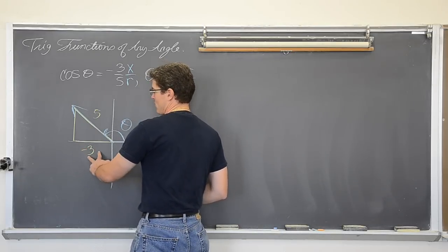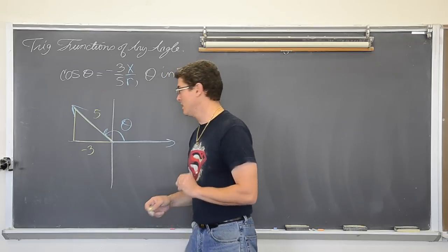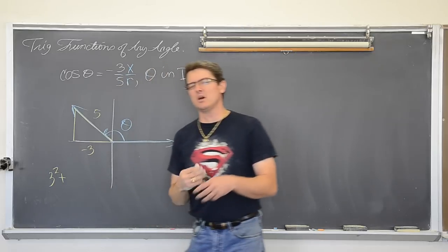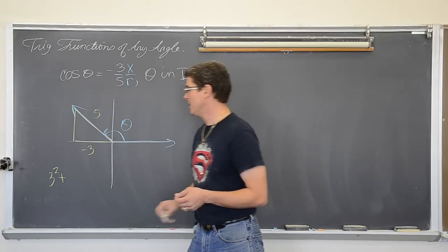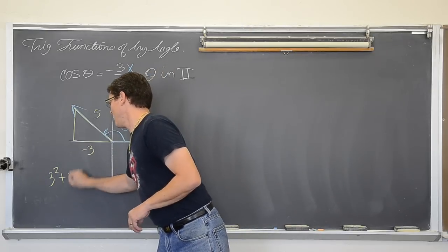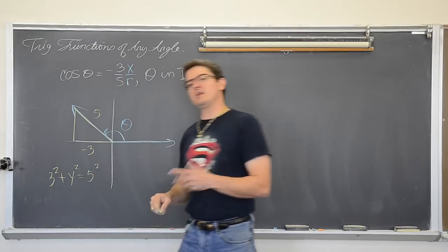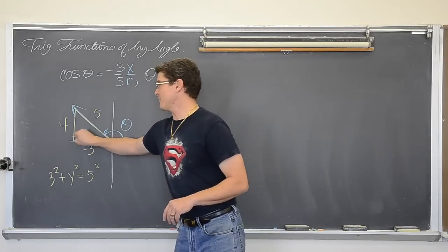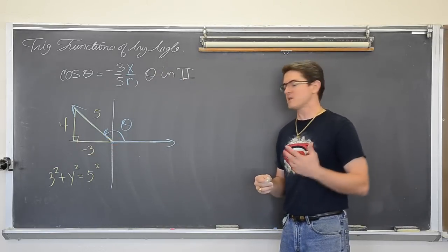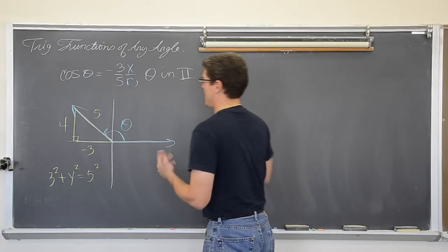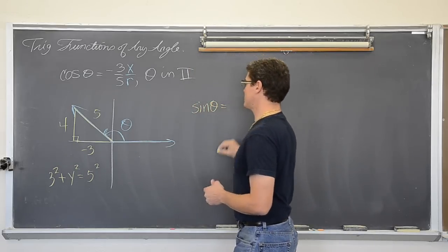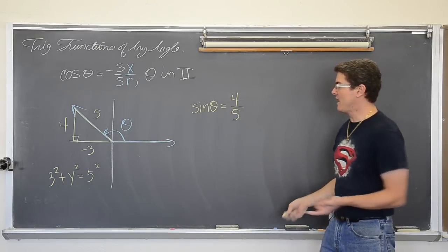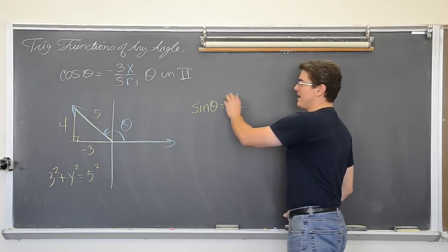By the Pythagorean theorem: three squared plus y squared equals five squared. Ignoring the negative because there is really no such thing as a negative distance — that is a directional sign. When you get done solving that, you are going to find out the y coordinate is four. Now that we have the three sides of our reference triangle, I can set up any trig function I like. The sine of theta is y over r: four over five.